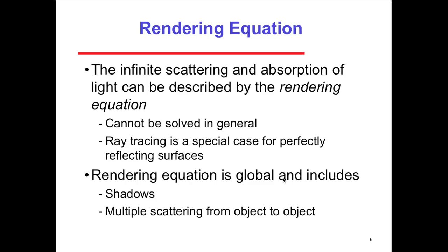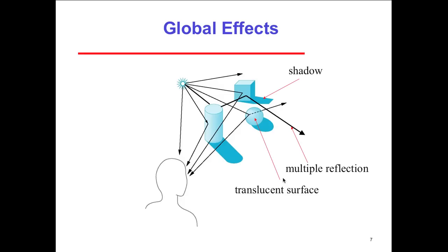There's a rendering equation that describes the infinite scattering and absorption of light, but a rendering equation cannot be solved in general. Ray tracing is a special case of perfectly reflecting surfaces — and when is it ever going to be perfect, given multiple light sources and different object properties? The rendering equation is global and includes shadows and multiple scatterings from object to object. The important thing to get out of this lecture is the vocabulary — the terminology being used.